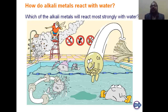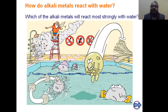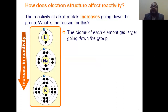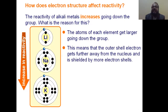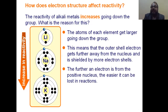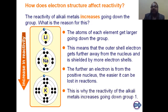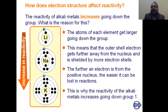How do alkali elements react with water? The reactivity of alkali elements also increases down the group from top to bottom. The reason is that the atom of each element gets larger — from lithium to sodium to potassium, the number of shells increases. As the number of shells increases, the distance between proton and electron also increases. The electron is further from the center, making it easier to lose. Therefore, reactivity increases from top to bottom.